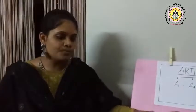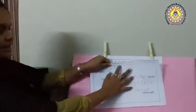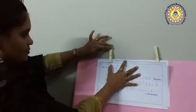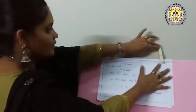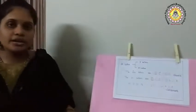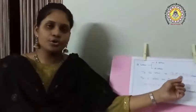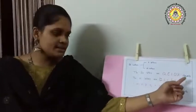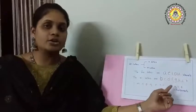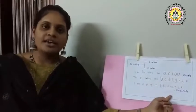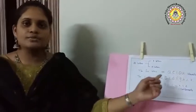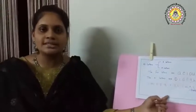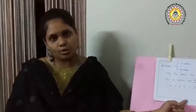In my previous class on vowels and consonants, I told you that alphabets are divided into two: vowels and consonants. What are vowels? A, E, I, O, U are vowels and the rest of the others are called consonants. In these articles, vowels and consonants play a key role.